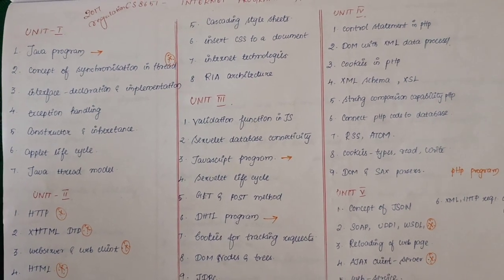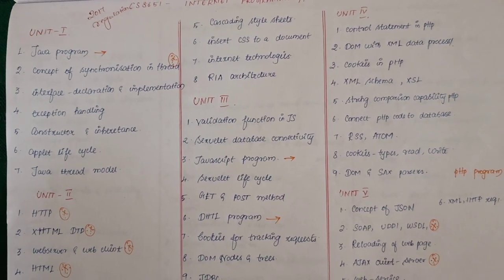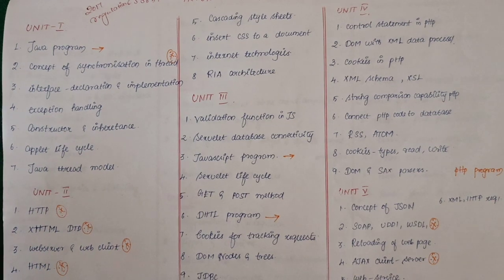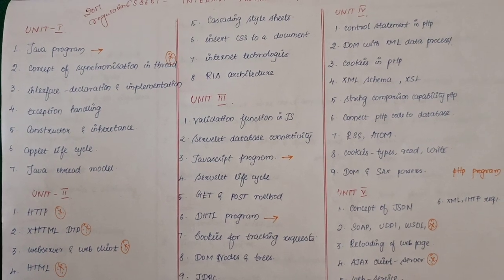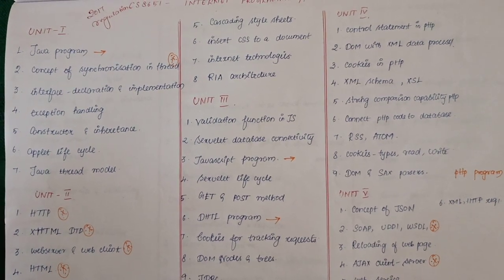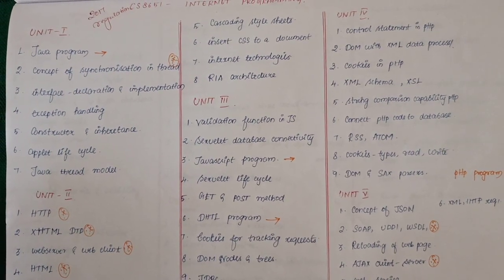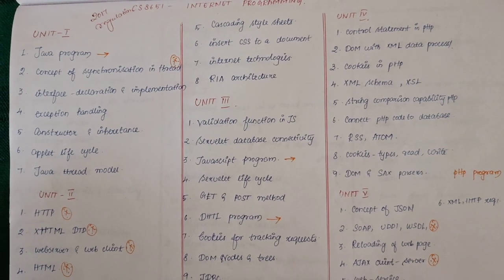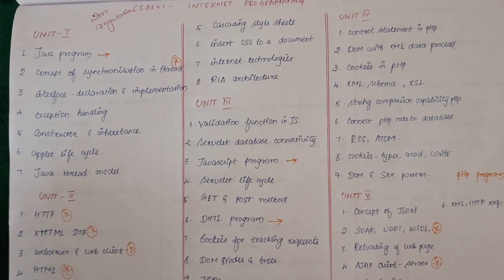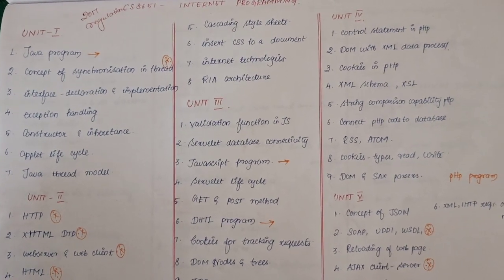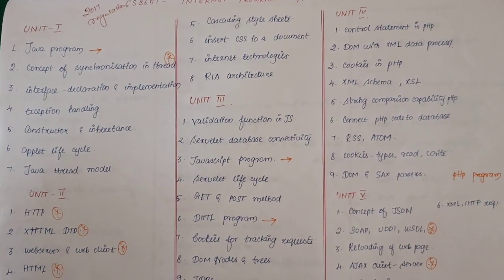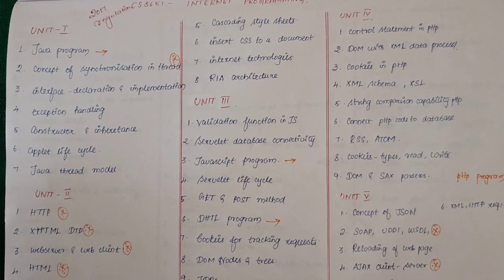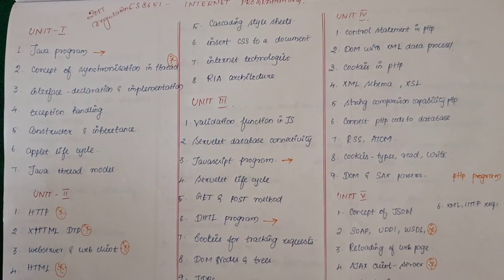If you have a statement, it will be a Java program. Next, the concept of Synchronization in a thread. Interface Declaration and Implementation — Java interfaces, where do you declare and implement? Exception Handling, Constructor and Inheritance, Applet Lifecycle, Java Thread Model.